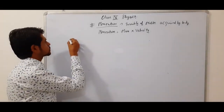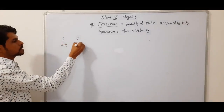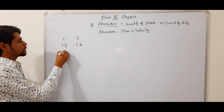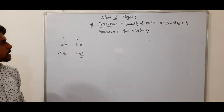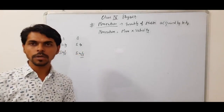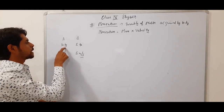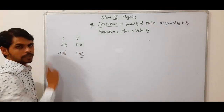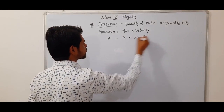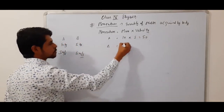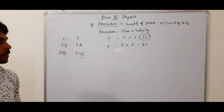Suppose we have two bodies A and B. A ka mass is 10 kg, B ka mass is 5 kg. Both are moving with 5 meter per second. So which body has greater momentum? Kis ka momentum zyada hai? A ki value: 10 into 5 equals 50. B ki value: 5 into 5 equals 25. So A body has greater momentum.